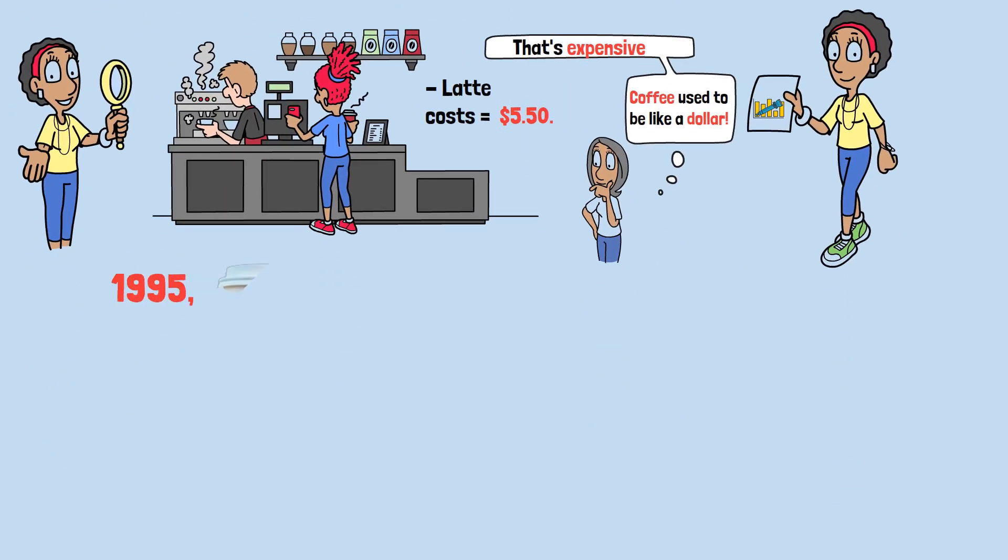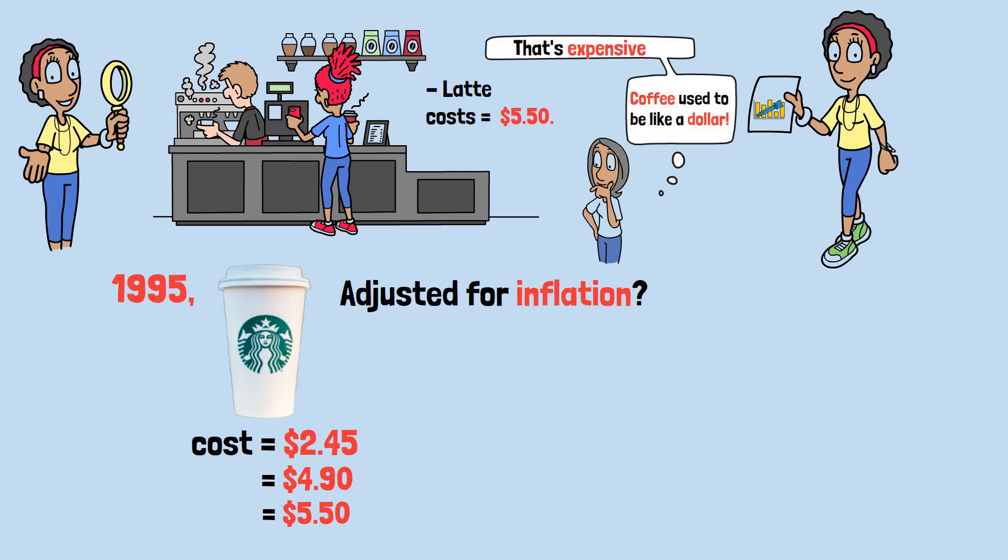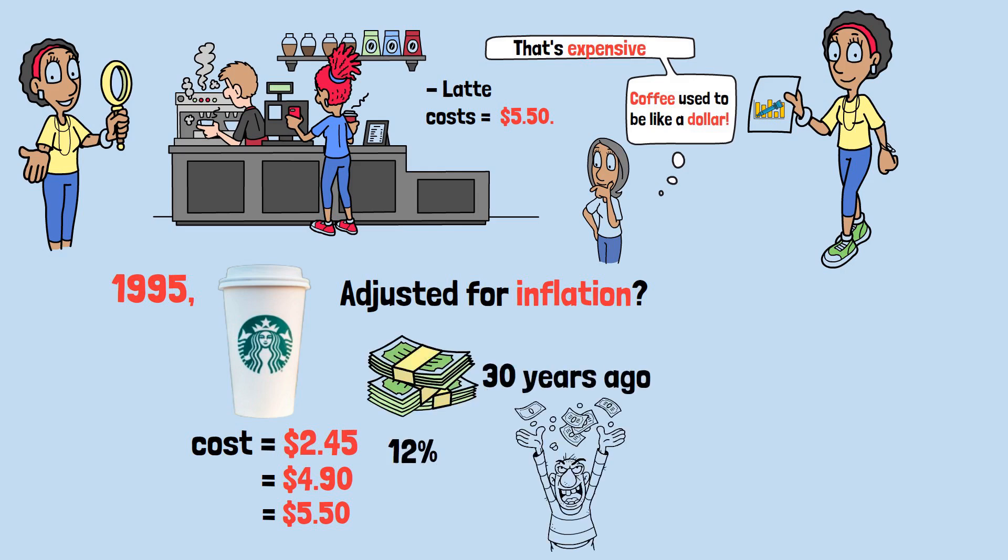You're anchored to a price from decades ago. In 1995, a Starbucks tall latte cost $2.45. Adjusted for inflation? That's $4.90 in today's money. So that $5.50 latte is only about 12% more expensive than it was 30 years ago. Not the highway robbery your brain is screaming about.